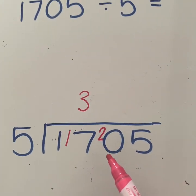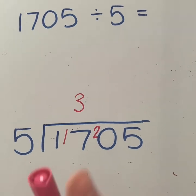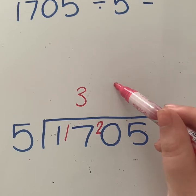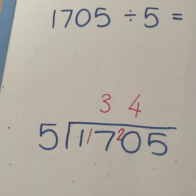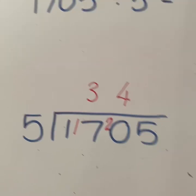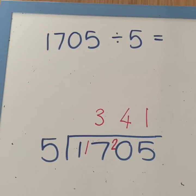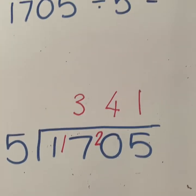So now I'm looking at how many fives go into 20. So I can count up again. I've got 5, 10, 15, 20. That's 4 exactly. So nothing is being carried over this time. And then how many fives go into 5 is just 1. So 1,705 divided by 5 is 341.